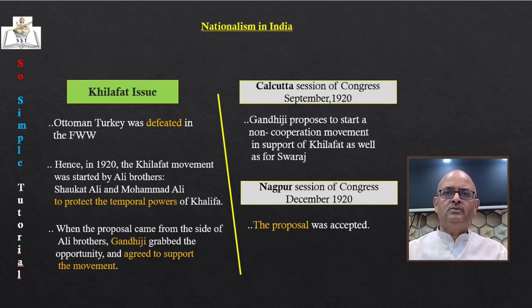Various social groups participated, each with its own hopes and aspirations. Students, teachers and lawyers responded enthusiastically in towns, seeing the movement as a gateway to freedom from foreign domination. Peasants joined in the countryside primarily against Talukdars and landlords — for them Swaraj meant no taxes and redistribution of land. Plantation workers from Assam also joined — for them Swaraj meant the right to move freely and retain links with their home villages.